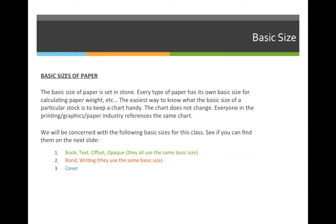We will be concerned with the following three types of paper, so you need to write down their basic sizes. One: book, text, offset, and opaque. We identify book and text as coated stocks and offset and opaque as uncoated stocks, but for our purposes we'll lump them all into the same category — we'll call it the green category, because they all use the same basic size. Bond and writing stocks also all use the same basic size, so we'll call them our orange category. And then we'll throw a third category together of all cover stocks, because they have yet another different basic size.